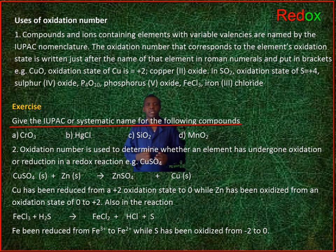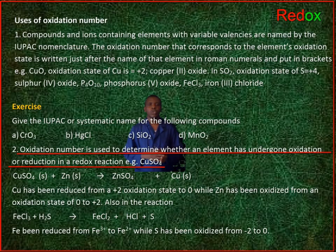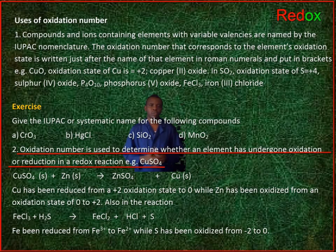IUPAC stands for the International Union of Pure and Applied Chemistry. 2. Oxidation number is used to determine whether an element has undergone oxidation or reduction in a redox reaction.